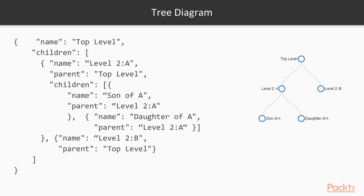The data required to produce this type of layout needs to describe the relationships, but this is not necessarily an enormous task. For example, this data in JSON form is for this diagram and it shows the minimum information required to form the correct layout hierarchy. It shows each node as having a name that identifies it on the tree and, where appropriate, the children it has as an array and its parent.